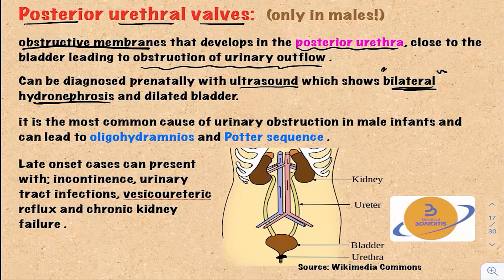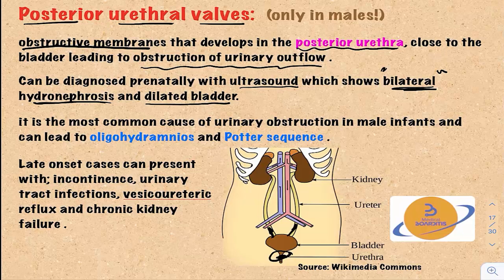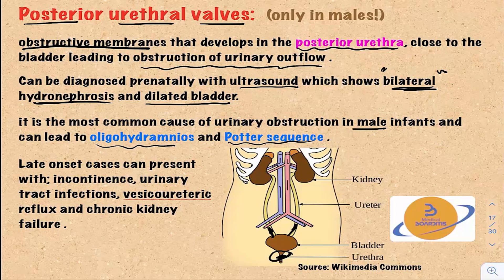This hydronephrosis will be bilateral because the obstruction in this area will affect both kidneys. This will also result in a dilated bladder. It is the most common cause of urinary obstruction in male infants and can lead to oligohydramnios and Potter sequence, because the decreased production of fetal urine leads to decreased production of amniotic fluid.